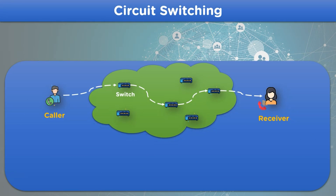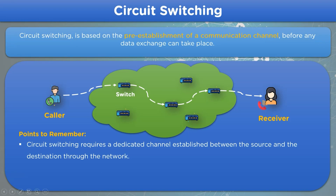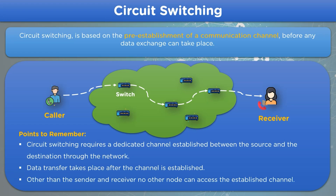Now let's look into some points to remember about circuit switching. Circuit switching requires a dedicated channel established between the source and the destination node for data to pass through. Data transmission can take place only after the path is established. And the last point to remember: other than the sender and the destination node, no node can interfere with the transmission of data along the established route.